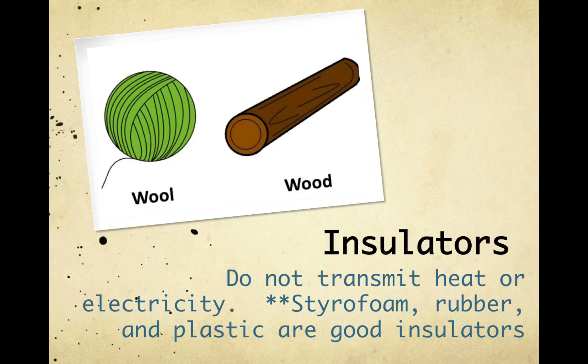The next property is insulation — substances that exhibit that property are referred to as insulators. Insulators do not transmit heat or electricity. Some examples are styrofoam, rubber, and plastic.